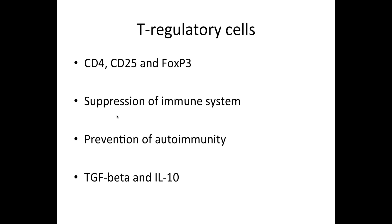So what are the basic functions of T-regulatory cells? It is suppression of the immune system and prevention of autoimmunity. Usually when you have a pathogen infecting you, such as a bacteria, your immune system starts to respond and releases a lot of inflammatory cells. But those inflammatory cells can actually become harmful to you, and therefore T-regulatory cells prevent them from overdoing their function and attacking your own system. They will suppress the immune system once the pathogen has been eliminated.